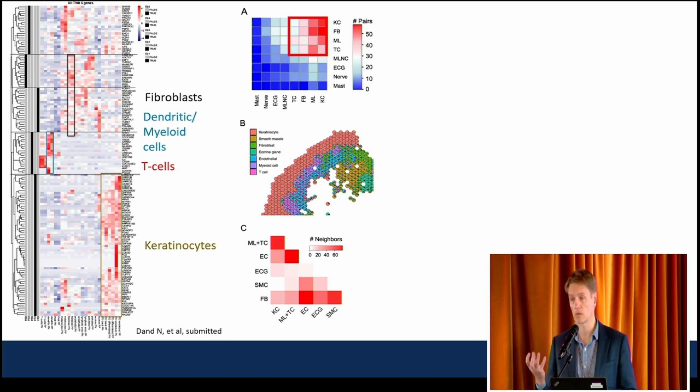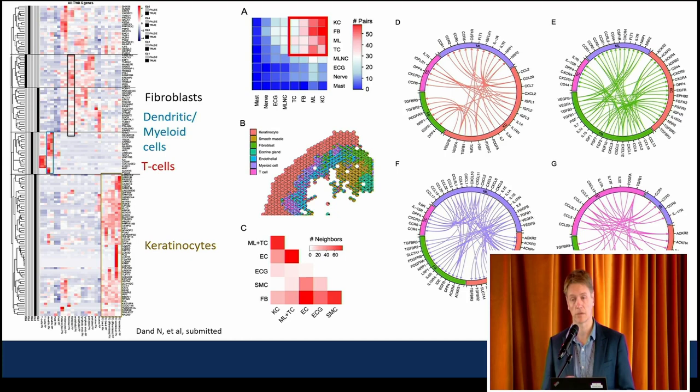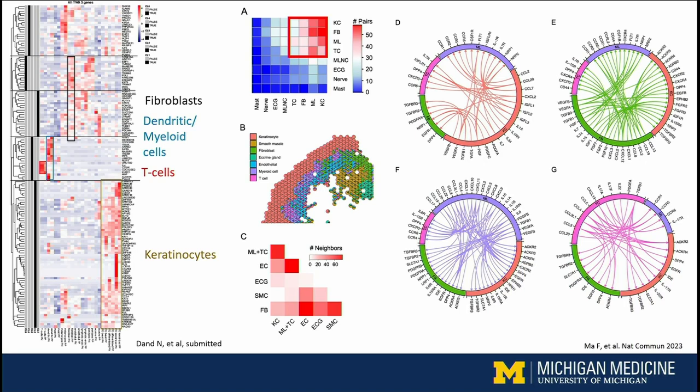Using these single-cell technologies, you can really dig down fairly deep into how these cells are actually communicating, and what the specific chemokines and cytokines are that are driving these interactions. There are four circles on the right, each showing how keratinocytes, fibroblasts, T cells, and myeloid cells are communicating with the other three cell types. You can really see how dynamic and incredibly complex this kind of interaction is.